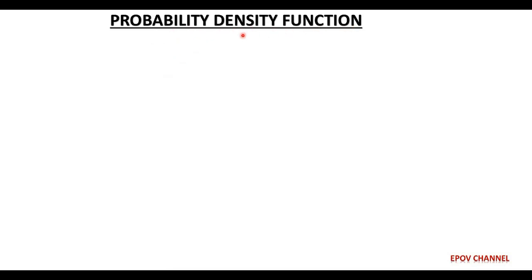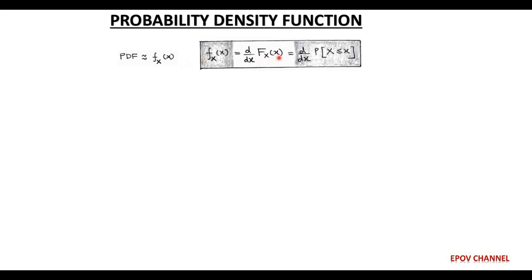The probability density function, or PDF, for random variable X is denoted by the function small f of real value x. This probability density function can be expressed in terms of the cumulative distribution function, or CDF, denoted by capital F of x. PDF is expressed as the derivative of the CDF with respect to x: small f(x) equals d/dx of capital F(x). Both PDF and CDF are functions of real value x, not of random variable X.